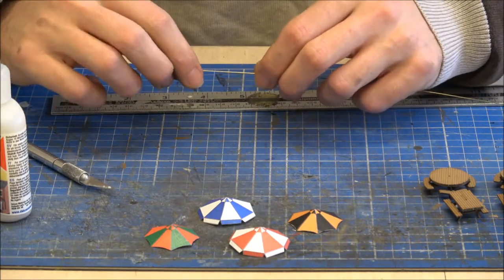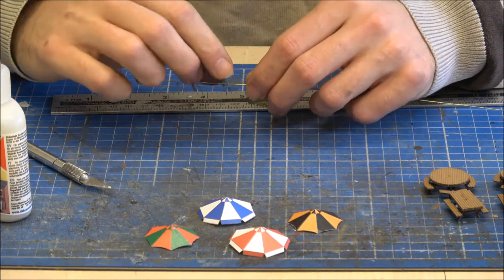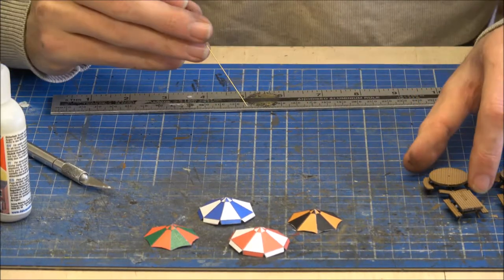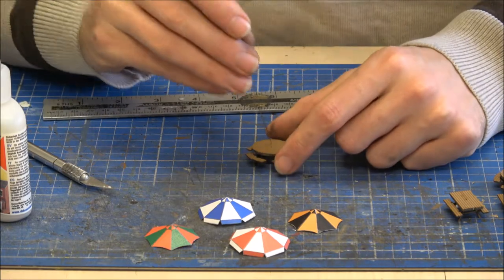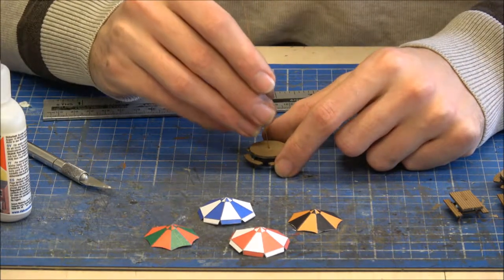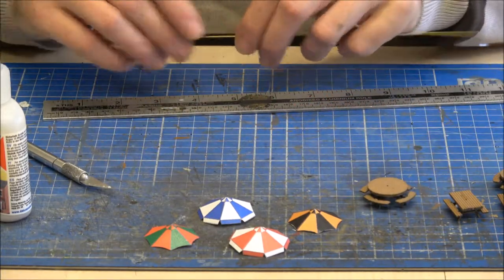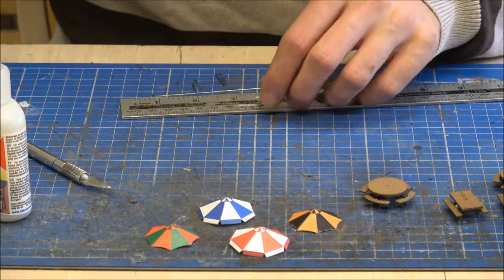And this makes up the actual stand for the umbrella, the actual stick of the umbrella. But as long as you've got something that will fit through the hole in the centre of each of the different benches, then you should be okay.